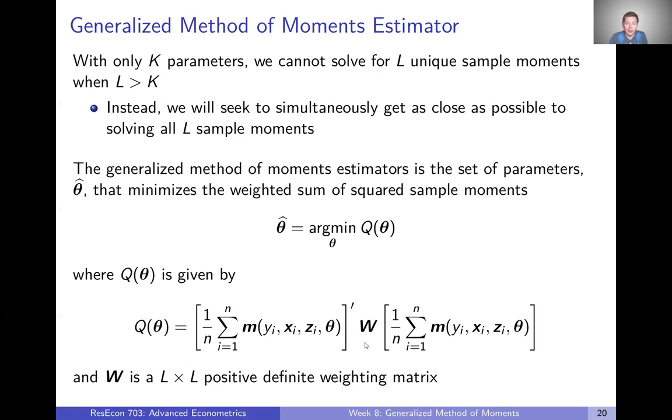But then we have this W matrix. W is going to be an L by L positive definite weighting matrix. That's going to be in the middle. And W is going to essentially weight each one of your moment conditions against one another. So it could just be an identity matrix that weights them all equally.